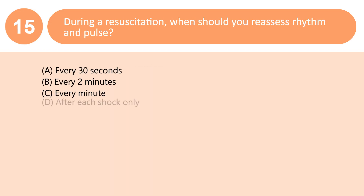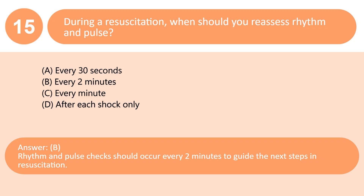During a resuscitation, when should you reassess rhythm and pulse? A. Every 30 seconds. B. Every 2 minutes. C. Every minute. D. After each shock only. Answer: B. Rhythm and pulse checks should occur every 2 minutes to guide the next steps in resuscitation.